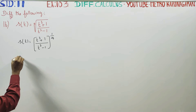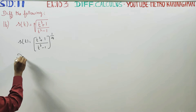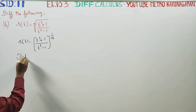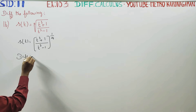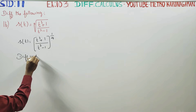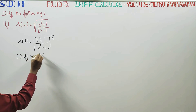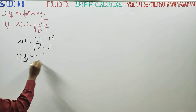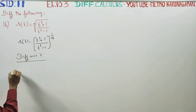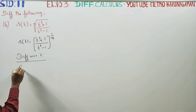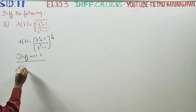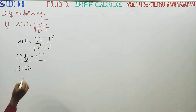Now I am going to differentiate with respect to t. The solution will start like this: s dash t is equal to...